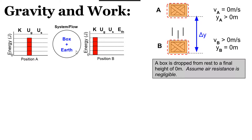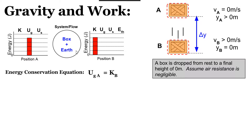If there are no external forces involved in this situation — no positive or negative work done — then the energy conservation equation for this scenario is that the gravitational potential energy at position A is equal to the kinetic energy stored at position B.